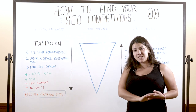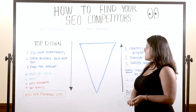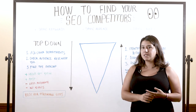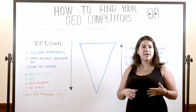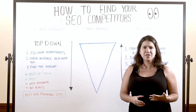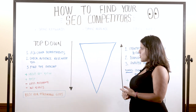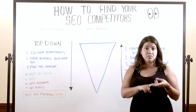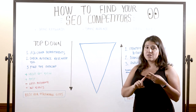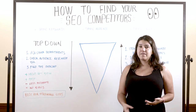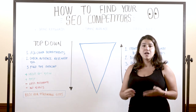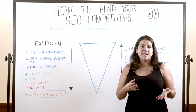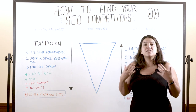The very first thing you are going to do is contact other departments. Depending on where you are and the type of vertical that you're working in, you're going to want to talk to sales, support, customer success, other areas of marketing, and even engineering. Ask them to provide a list of their perceived competitors.